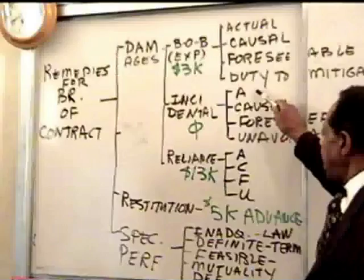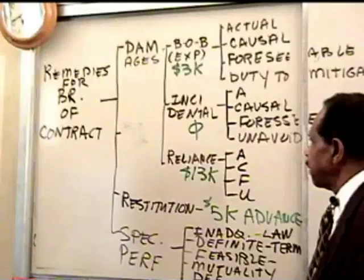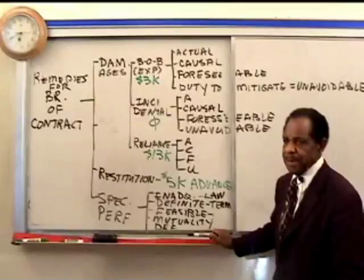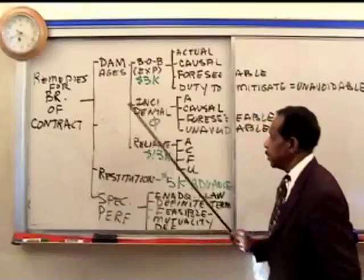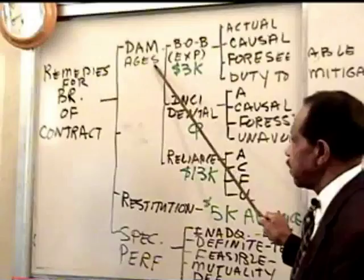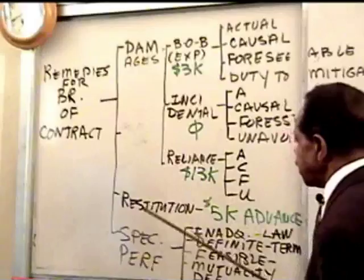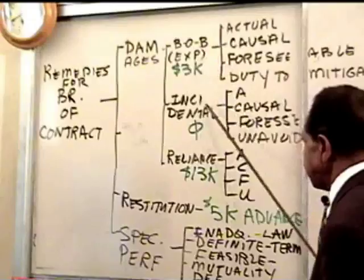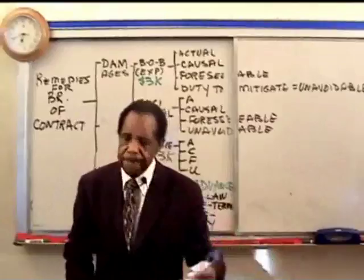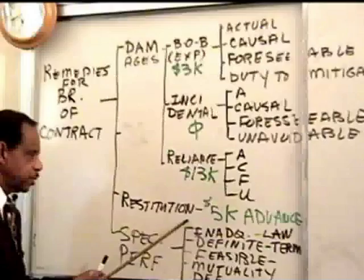There is one more type of damage not yet mentioned — liquidated damages. We'll come back to those. Continuing our walkthrough: the remedies for breach of contract are three kinds — damages, restitution, and specific performance. As to damages: benefit of the bargain, incidental, reliance, and restitution. Restitution is another damage you can get from breach — if I've given you something in the expectation that you're going to perform the contract, I want that back. The actual, causal, foreseeable, unavoidable criteria do not apply to restitution — it's just giving back what's mine.